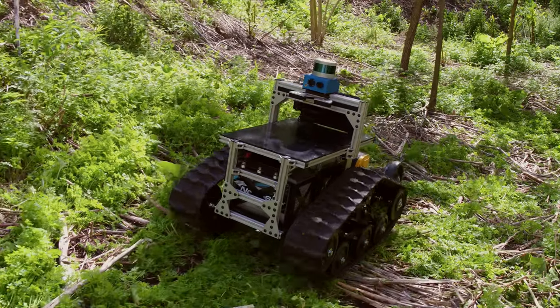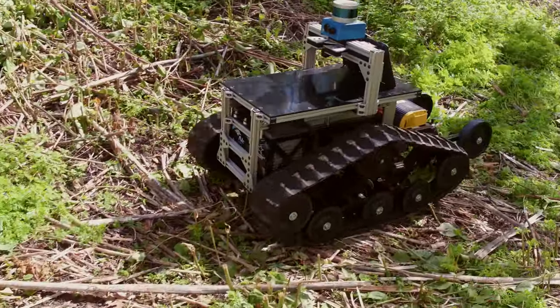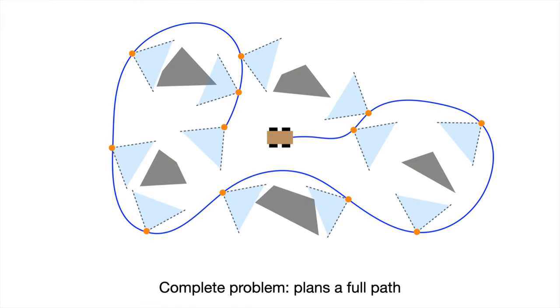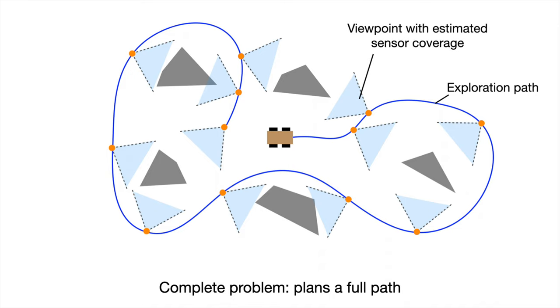The exploration problem is still a difficult problem to solve. First, it needs an efficient representation of the environment. As the vehicle explores, we constantly update the representation to keep track of the covered and uncovered areas. Second, it needs to efficiently search the representation for the paths.